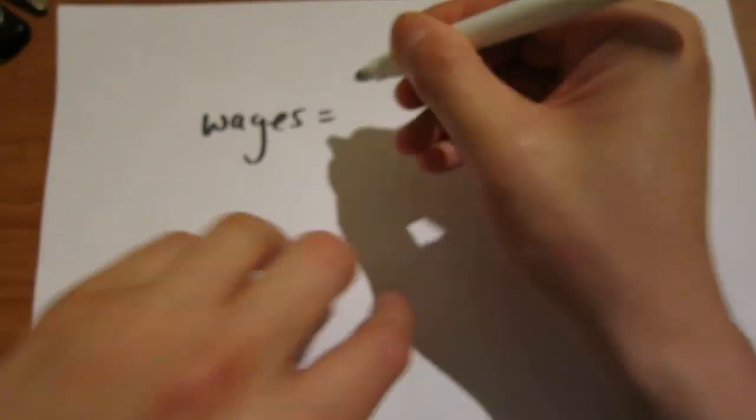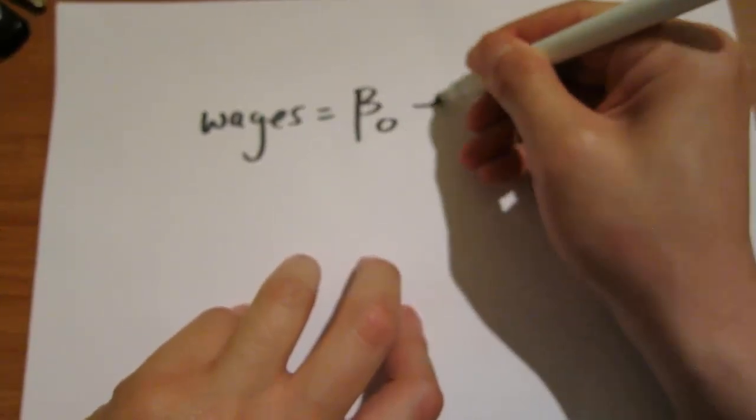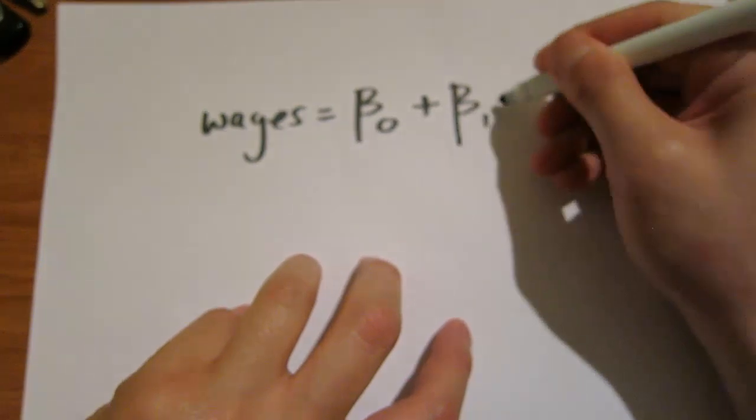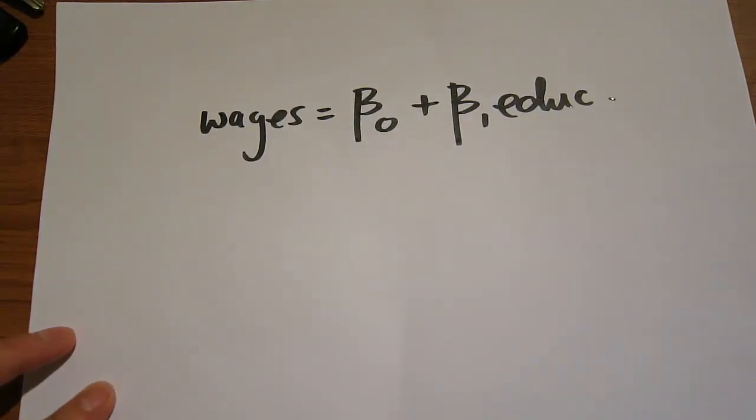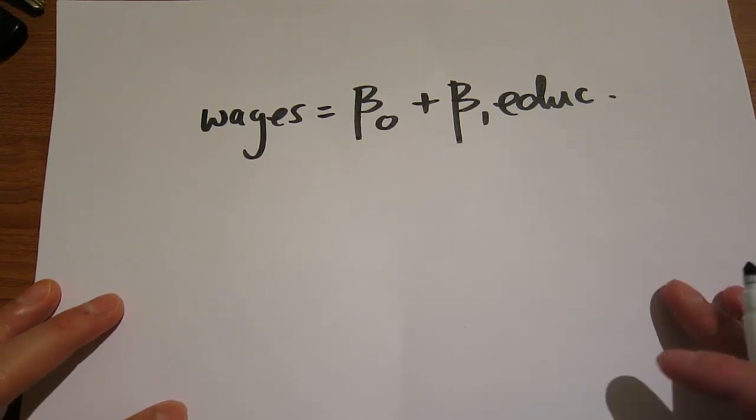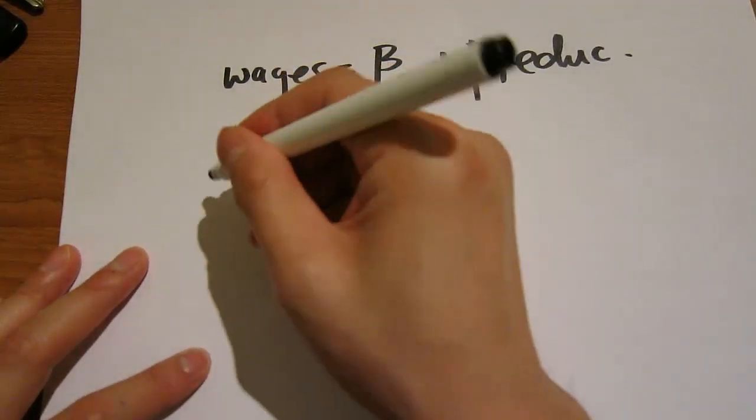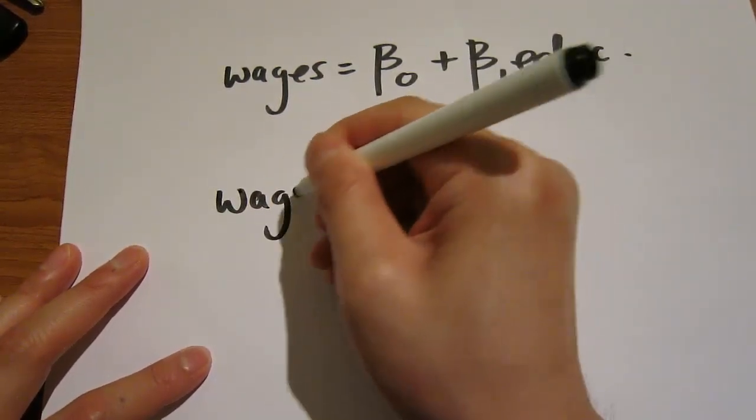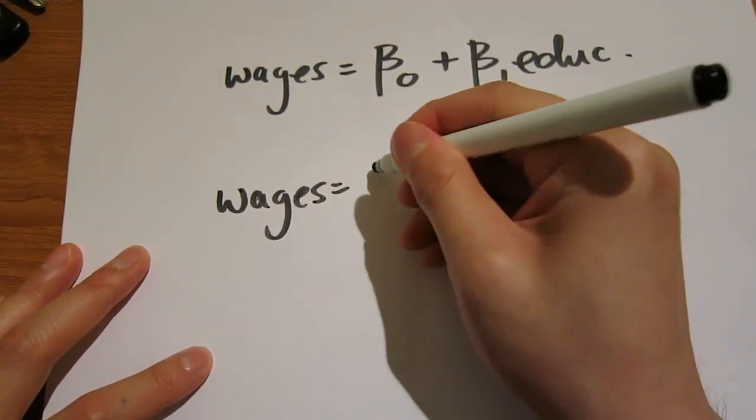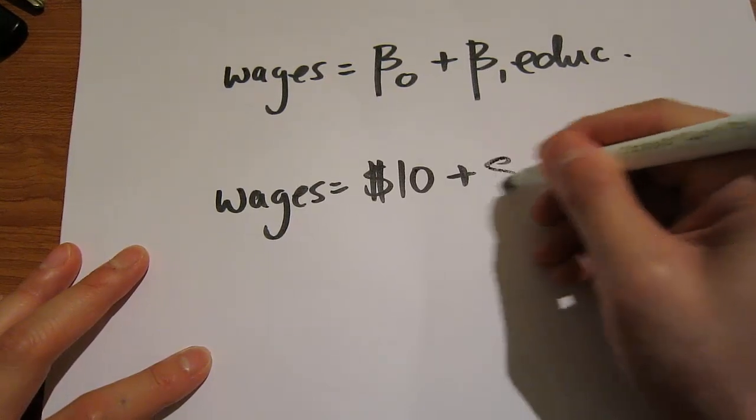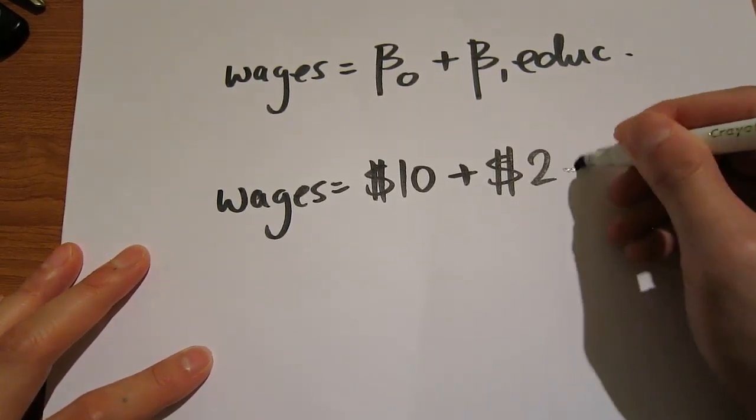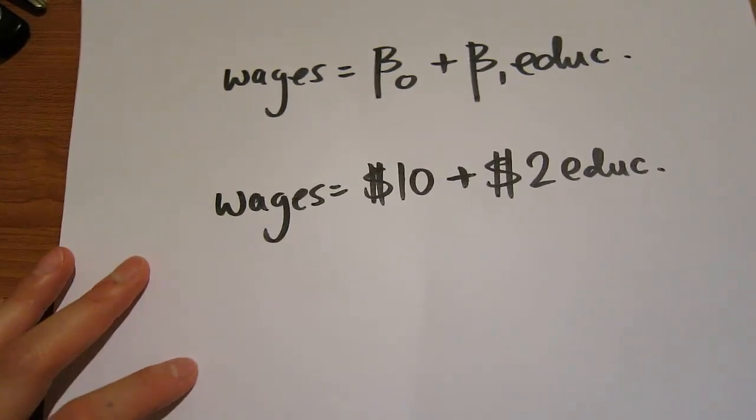Let's say we have an example where wages equal a linear function of education. We estimate this regression, punch it into Excel, and it gives us the following output: $10 as the intercept term and $2 as the slope coefficient.